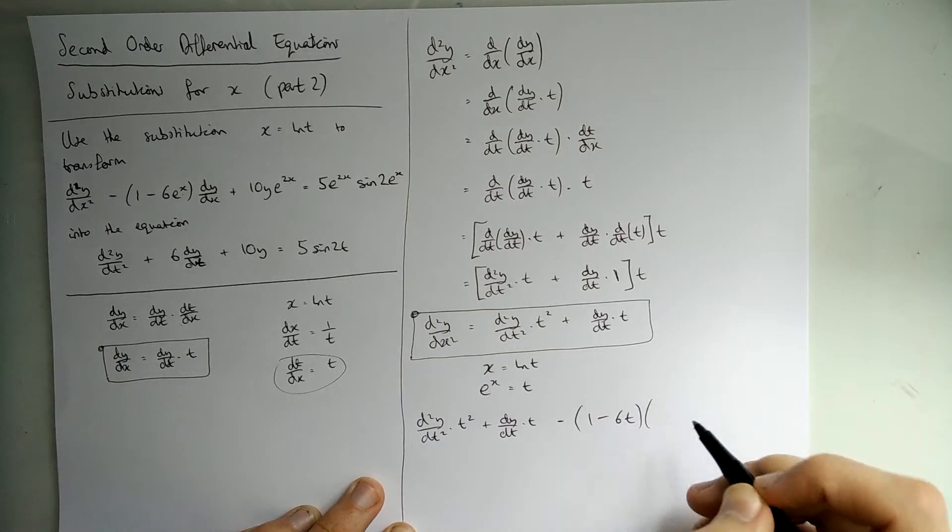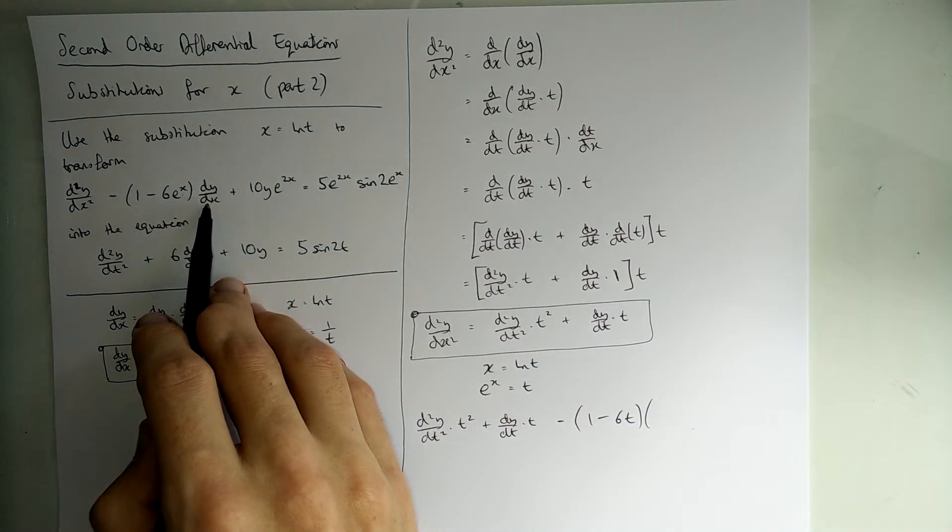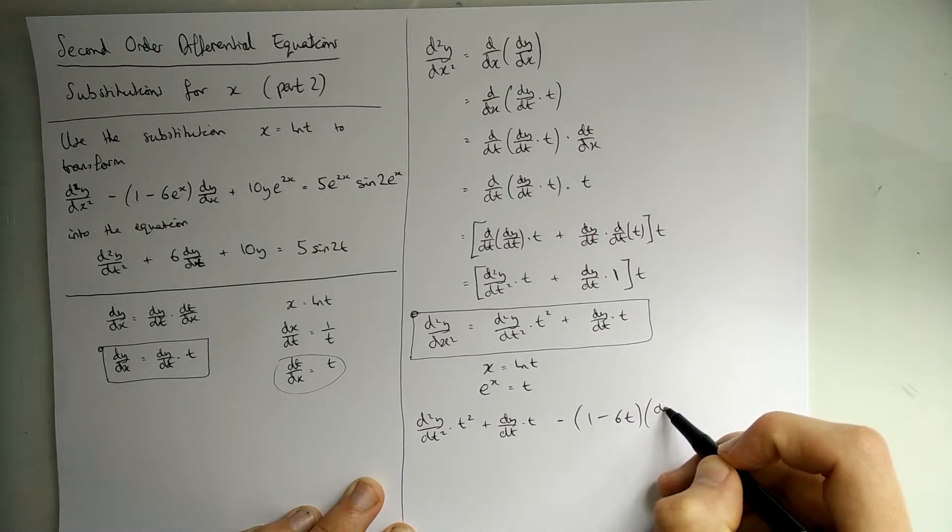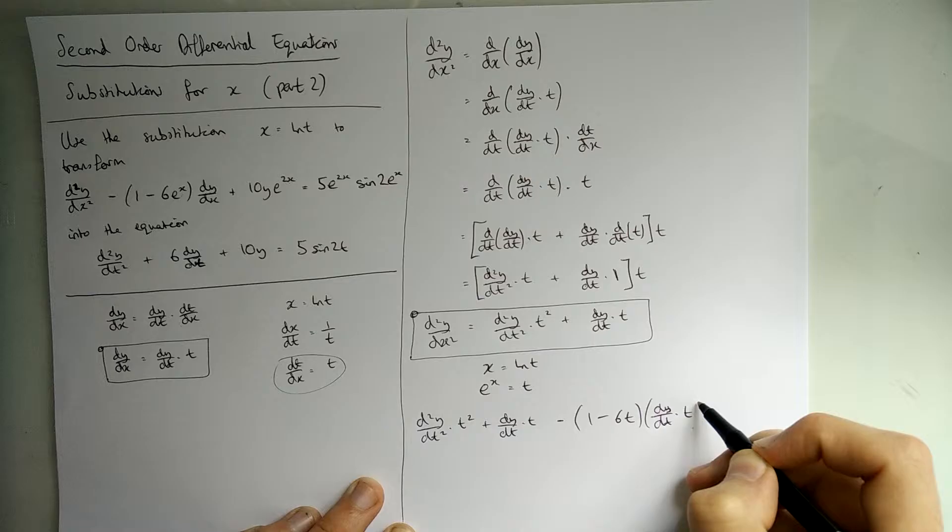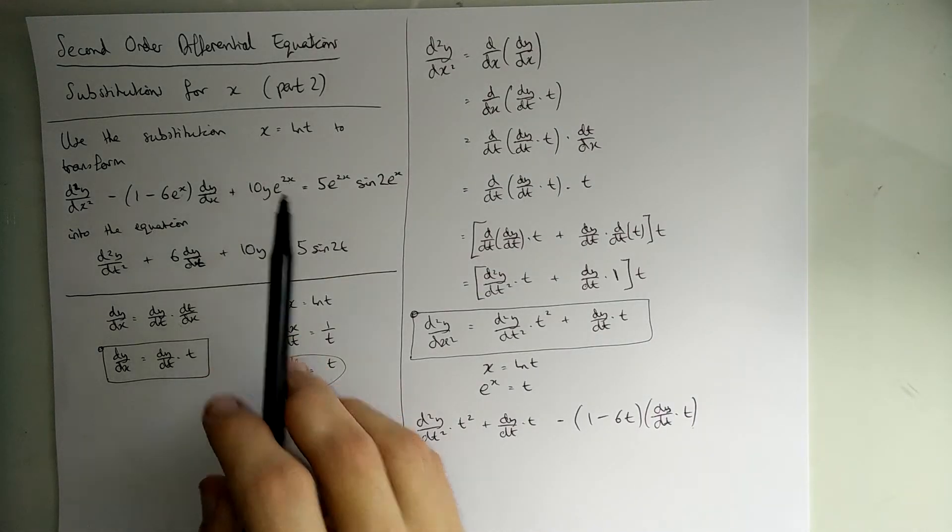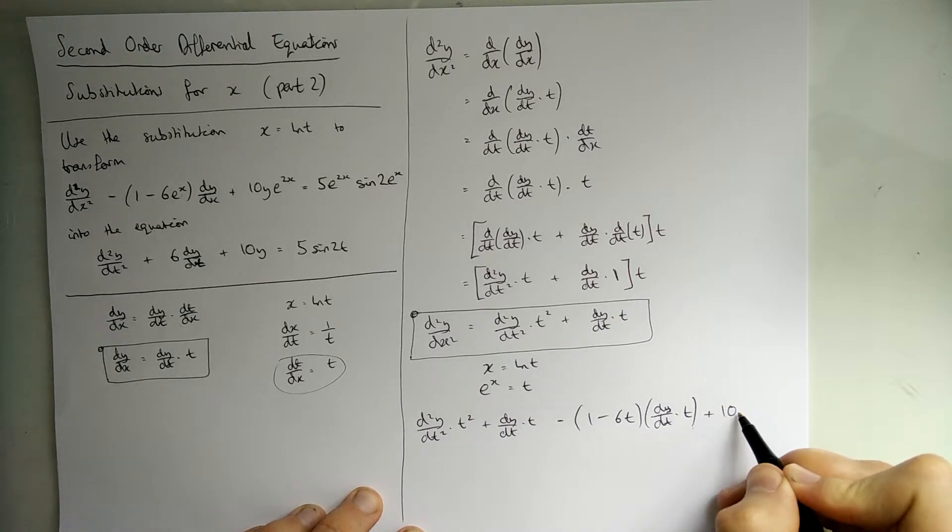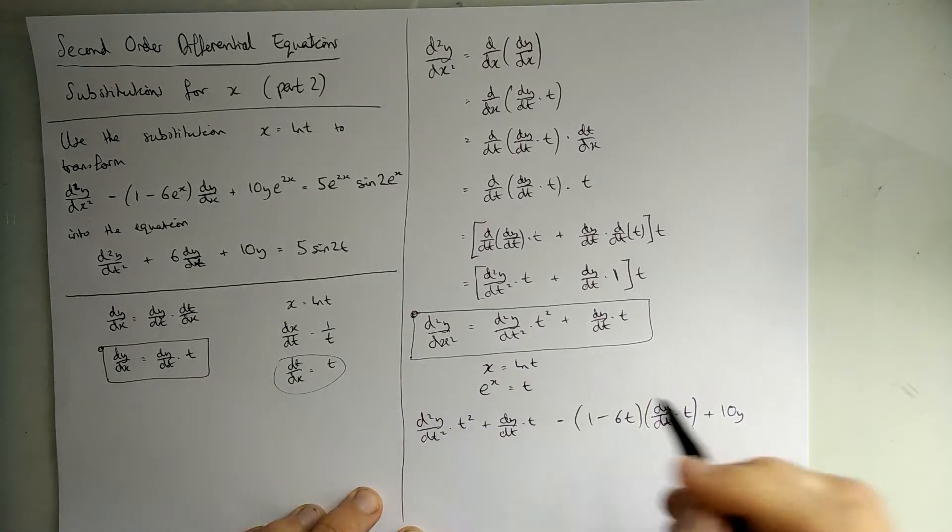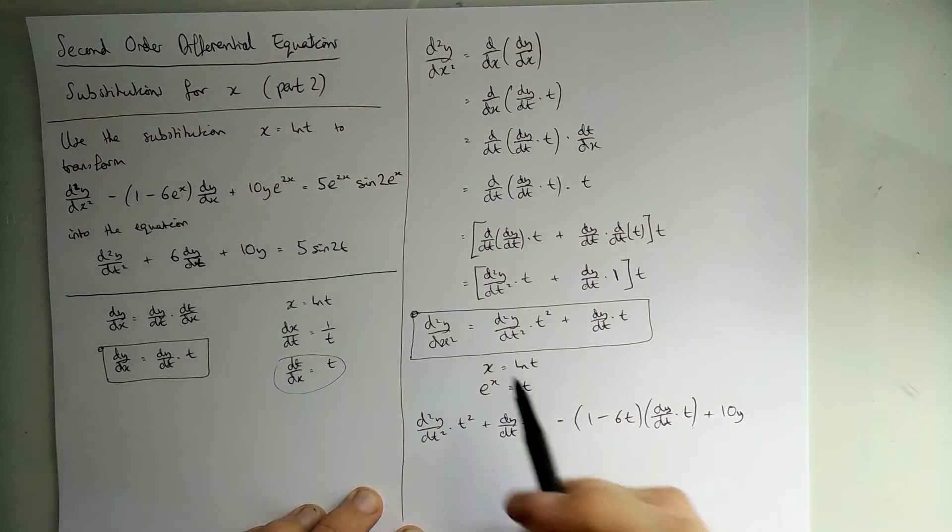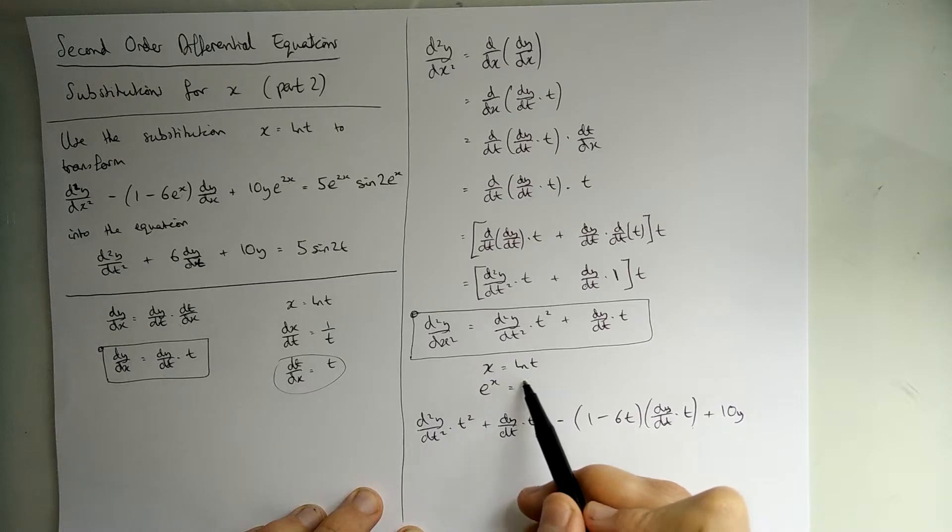And then dy/dx. So, we need to replace that. So, dy/dx is given by dy/dt times by t. Yep. And then just here we've got 10y. Doesn't need replacing because a y hasn't got an x in it. Then e^(2x). I suppose if we square this side, we get e^x. So, it would be t². Again, if you plugged in the ln t here, you get e^(2ln t).